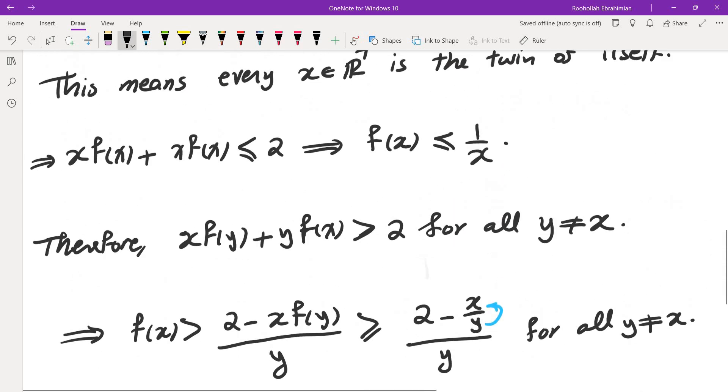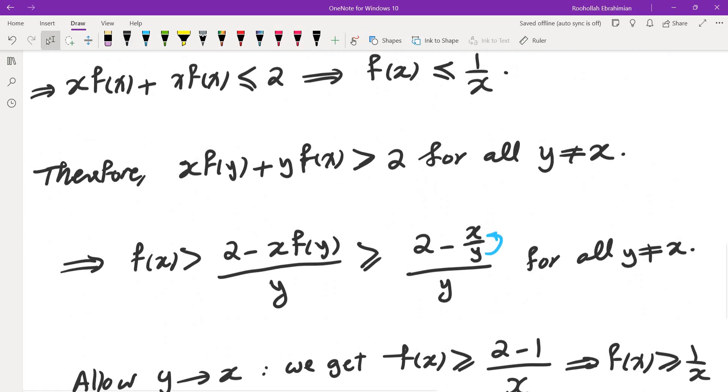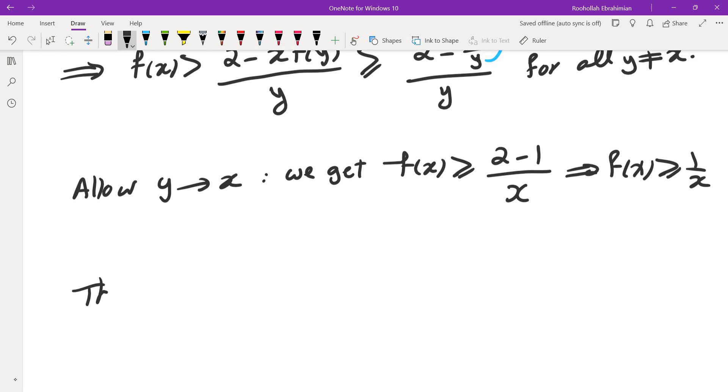Now combine this with what we had before, f(x) was less than or equal to 1 over x. Thus, f(x) equals 1 over x is the only such function. So that completes the solution to this problem.